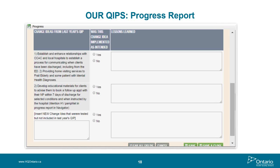HQO's role with QIPs is to highlight organizations that are doing well and determine which change ideas are working and how they are best implemented — and where things are not working so we can stop doing those or learn how to adapt them. We have the ability to look at the progress report from both an organization type perspective and a regional perspective. One example report shows the number of hospitals in each LHIN that have reported current performance worse than baseline in orange, maintained their baseline performance in yellow, and made improvement over baseline in green.